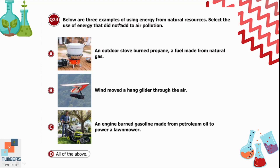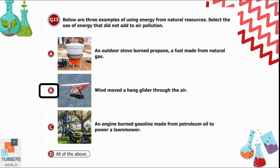Question 23: Three examples of energy use from natural resources are given. Which did not add to air pollution? Option A: an outdoor stove burning propane. Option B: wind moved a hang glider through the air. Option C: an engine burning gasoline to power a lawnmower. Options A and C pollute the air because fuel is burnt, but in option B the wind moves the glider without creating any air pollution. Option B is correct.